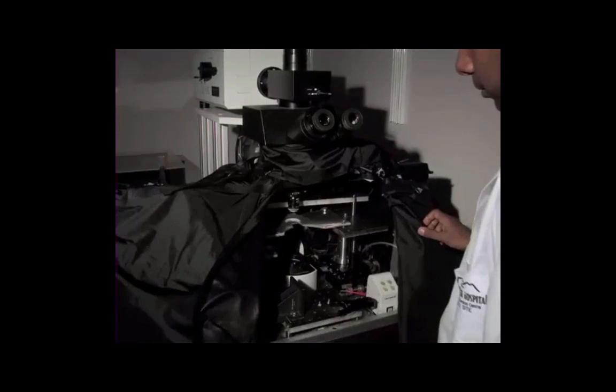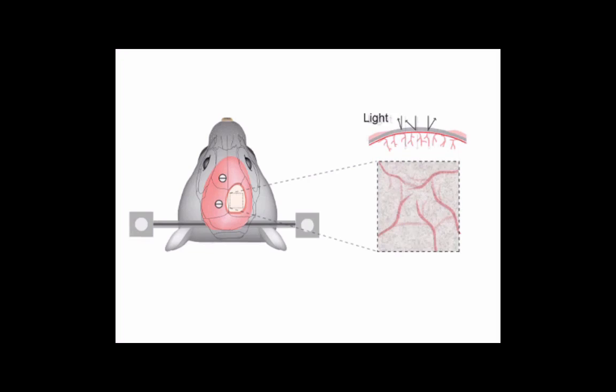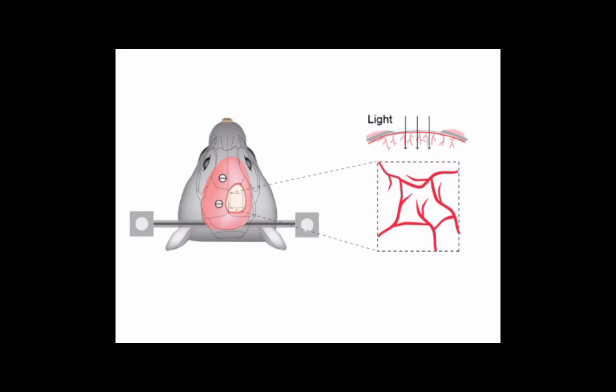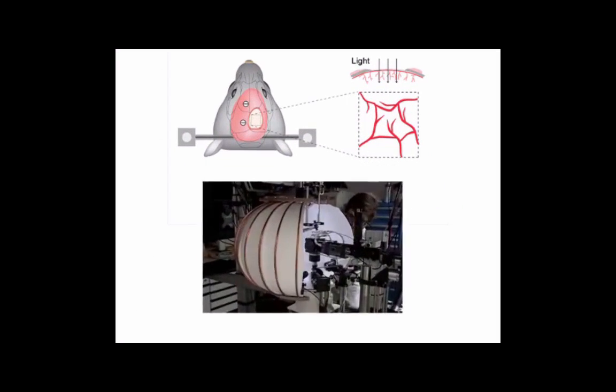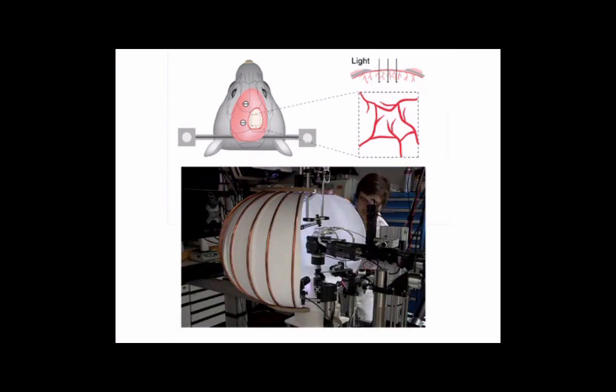Two-photon imaging is another type of fluorescence imaging, which can penetrate deeply into tissue, and is often used for live imaging of the brain in behaving animals.